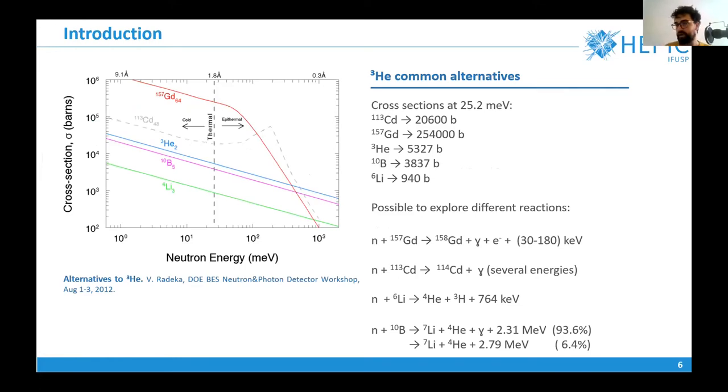Here I show some different materials commonly used in neutron applications. I show here the neutron capture cross-section of these materials in function of the neutron energy. We wish to work with thermal neutrons, so after the helium-3 here it's interesting the boron-10.